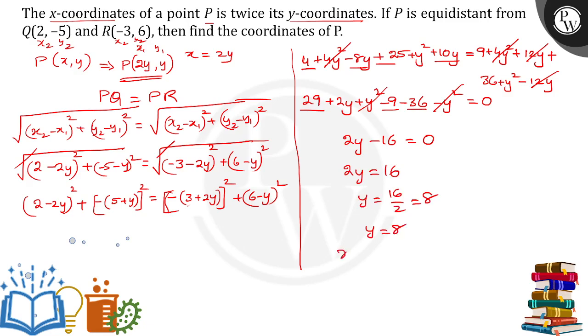If y is equal to 8, x is equal to 2y, so 2 into 8 we will get 16. Therefore the point P is (16, 8). Thank you.